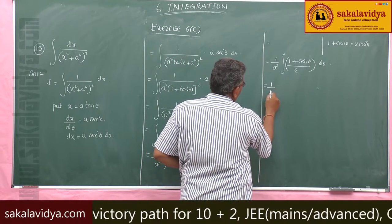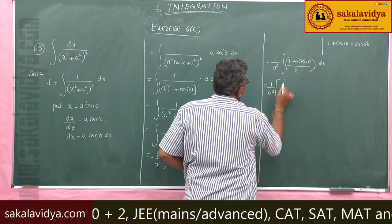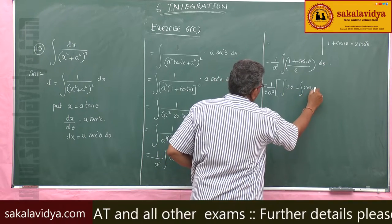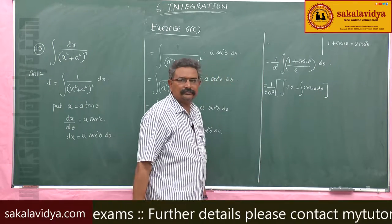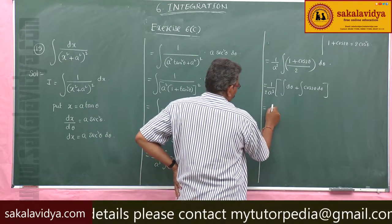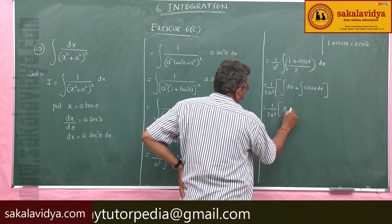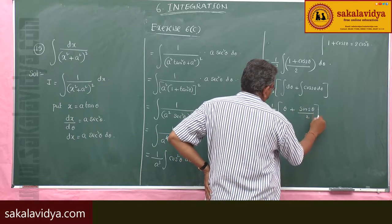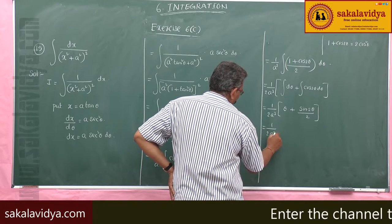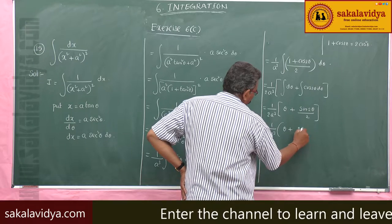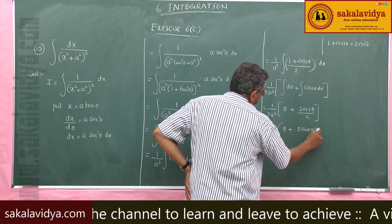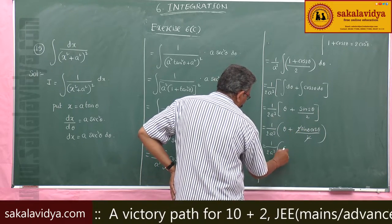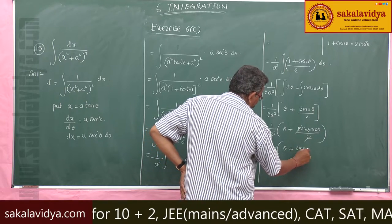Splitting: 1/(2a³) ∫dθ plus ∫cos 2θ dθ. This gives 1/(2a³) into θ plus sin 2θ/2, and using sin 2θ = 2·sin θ·cos θ, the 2s cancel, giving 1/(2a³) into (θ + sin θ·cos θ).